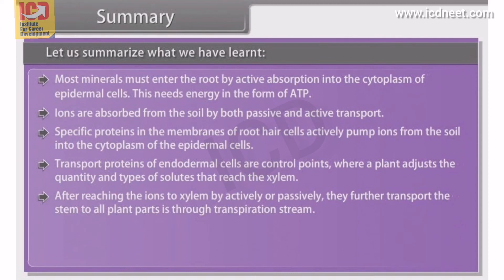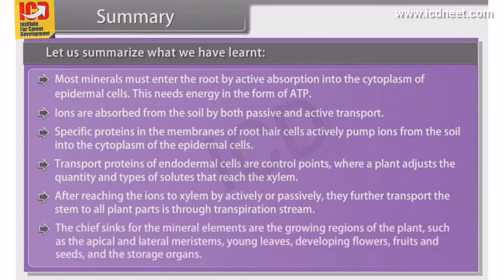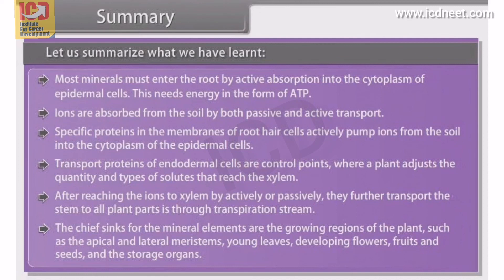After ions reach the xylem by active or passive means, their further transport up the stem to all plant parts is through the transpiration stream. The chief sinks for the mineral elements are the growing regions of the plant, such as the apical and lateral meristems, young leaves, developing flowers, fruits and seeds, and the storage organs.